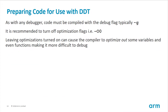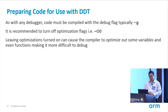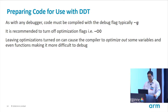To use your code with DDT, first recompile it with -g to get the debug symbols. We recommend turning off optimization flags, typically with -O0. If you forget to do that, the compiler may optimize out variables, making debugging difficult because those variables don't actually exist when you run it.